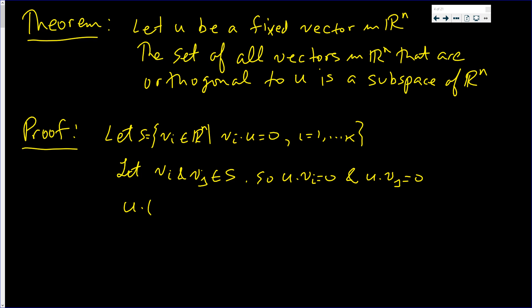U · (Vi + Vj). How? I said that's 0 and that's 0, and 0 plus 0 is 0. So we have closure under addition.